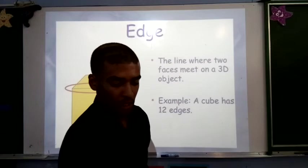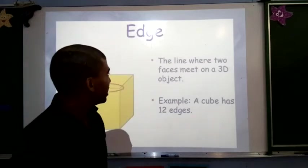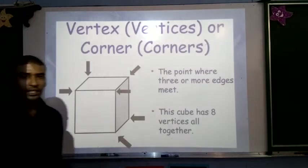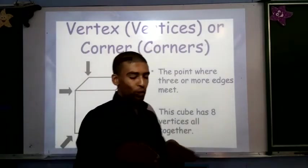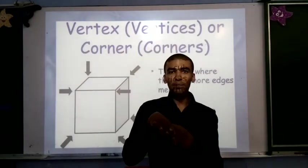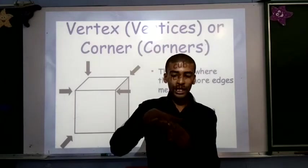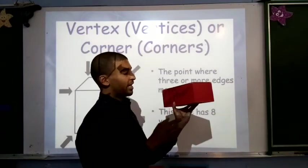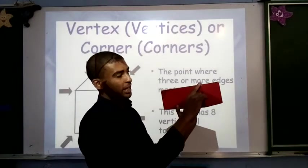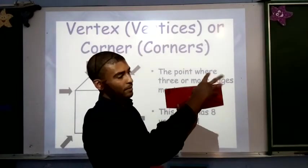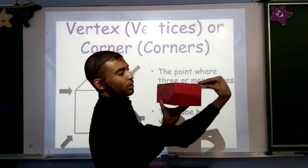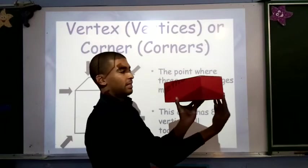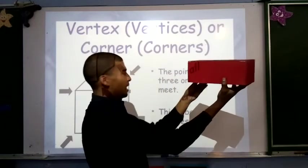The final thing we are going to be looking at are our vertices. Now, our vertices, so firstly we saw where edges met, or where our faces met, now we're going to be looking at where our edges meet. So, with our rectangular prism, our edges meet there, and there, so that's 1, 2, 3, 4, 5, 6, 7, and 8.